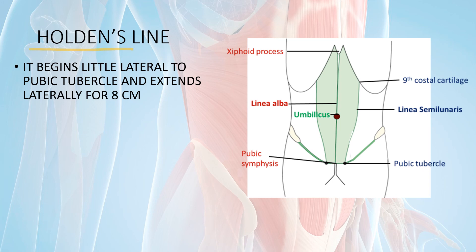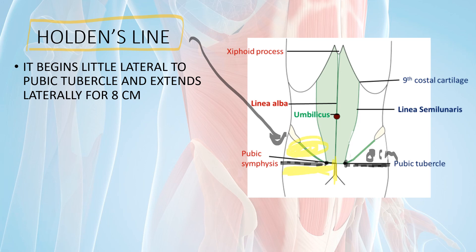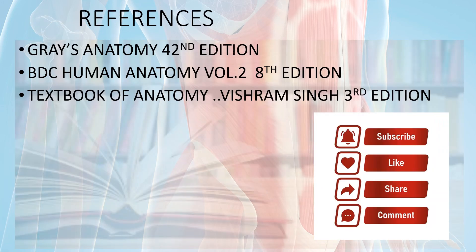Lastly, there is a line known as Holden's line. The pubic symphysis is in the center, with the pubic tubercles on each side. If we draw a line 8 centimeters lateral from the pubic tubercle, that line is Holden's line. This is the partition between the abdomen and the thigh. Because of Holden's line, any collection or fluid in the abdomen cannot trickle down to the thigh. Thank you — you can give any suggestions.